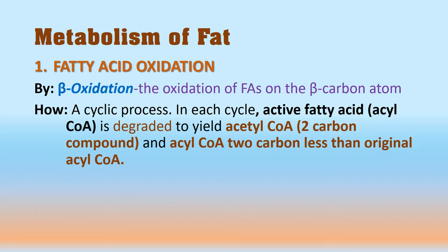The most common pathway of fatty acid oxidation is known as beta oxidation, defined as the oxidation of fatty acids on the beta carbon. It is a cyclical process, and in each cycle there is production of an active fatty acid or fatty acyl-CoA, which is degraded to yield acetyl-CoA — a two-carbon compound that enters the TCA cycle and yields energy.